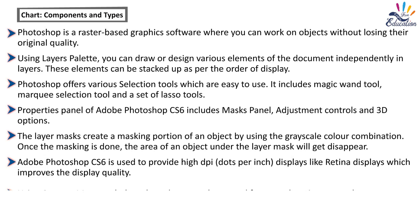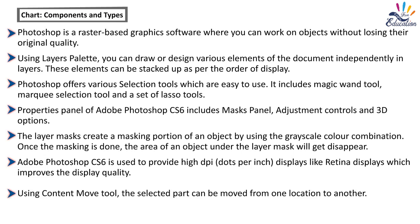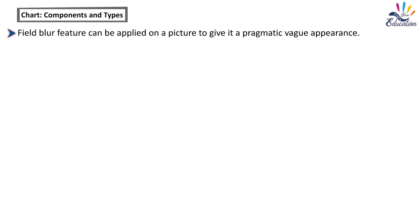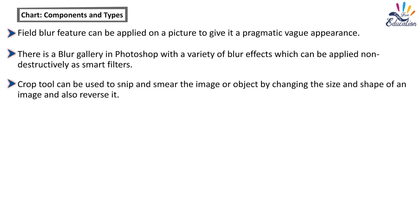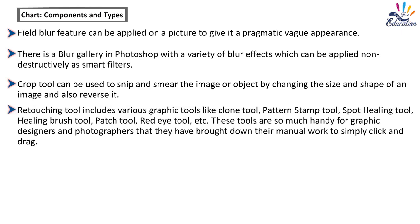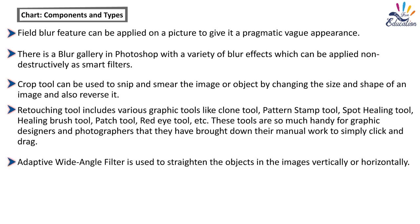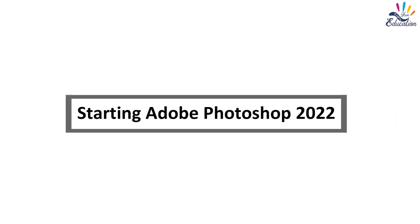Using the Content Move tool, the selected part can be moved from one location to another. The Field Blur feature can be applied on a picture to give it a pragmatic vague appearance. There is a blur gallery in Photoshop with a variety of blur effects which can be applied non-destructively as smart filters. The Crop tool can be used to snip and reshape an image by changing its size and shape, and also reverse it. Retouching tools include Clone tool, Pattern Stamp tool, Spot Healing tool, Healing Brush tool, Patch tool, Red Eye tool, etc. The Adaptive Wide Angle filter is used to straighten objects in images vertically or horizontally.